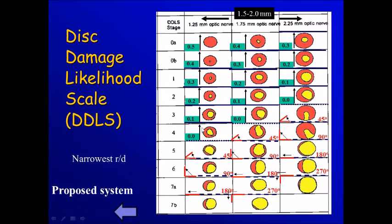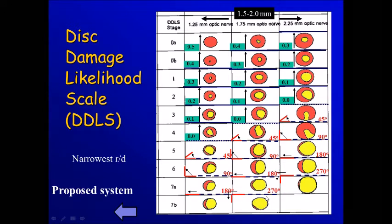For disc changes, we can depend on the disc damage likelihood scale, and if we have areas of zero, either small part or very extensive, this is severe glaucoma.